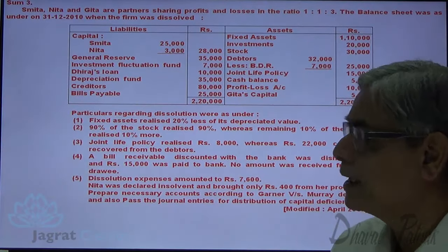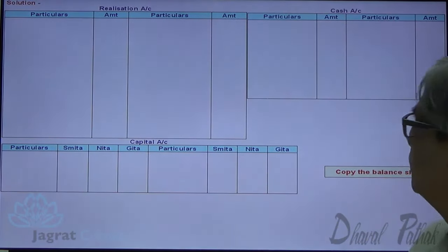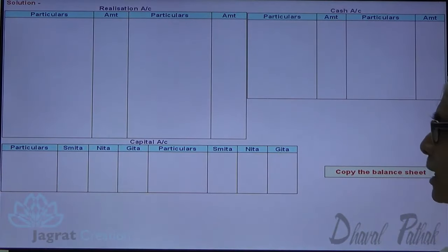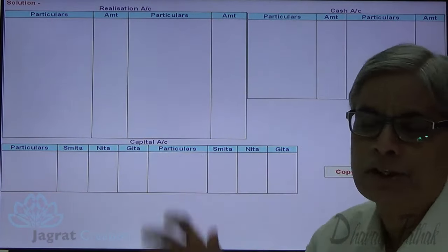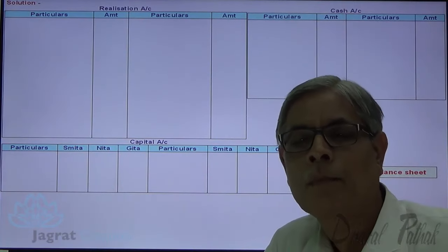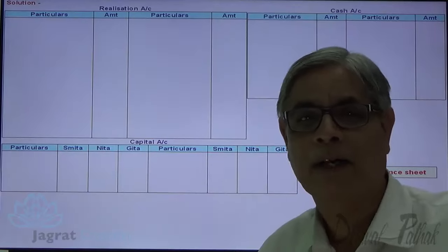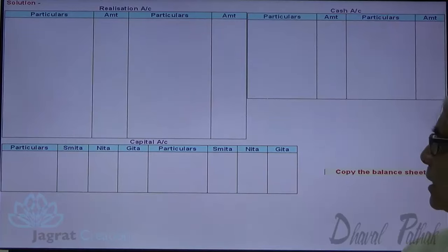After considering these things, let us start with the sum. I am going to prepare necessary accounts: the realization account, capital accounts, and cash account. Copying the balance sheet is my first step — assets to be realized are debited to realization account, liabilities to be settled are credited to realization account, capital balances and distributed profits and losses are transferred to respective capital accounts, and cash balance will appear in cash account.